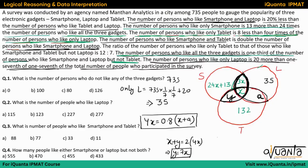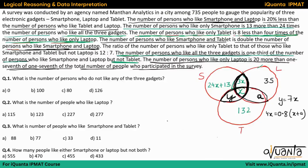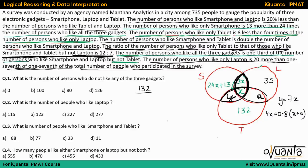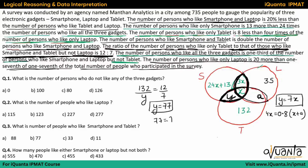The ratio of the number of persons who like only tablet to those who like smartphone and tablet but not laptop is 12:7. Only tablet is 132, and smartphone-and-tablet-but-not-laptop is the region y. So 132/y = 12/7, which gives y = 77. Since y = 7x, we get 77 = 7x, so x = 11.